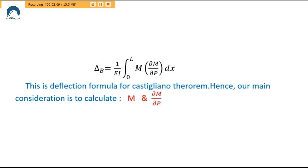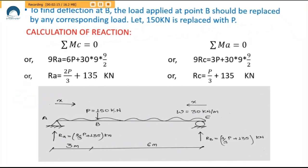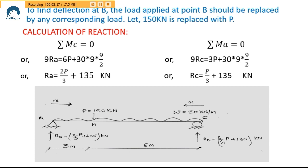The general idea of Castigliano's theorem is that the load at any point where deflection is to be computed is replaced by a generalized load P. It can be any symbol, but for uniformity let us call it P.